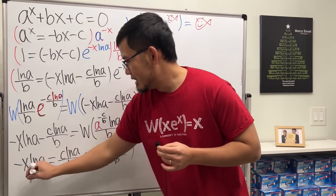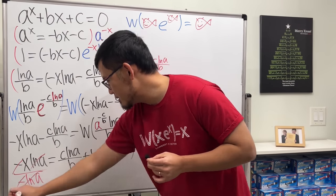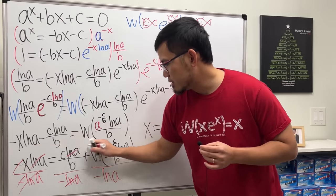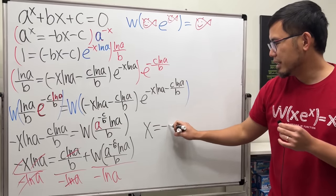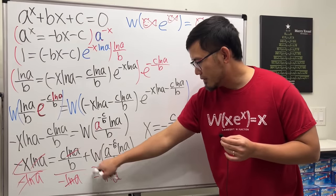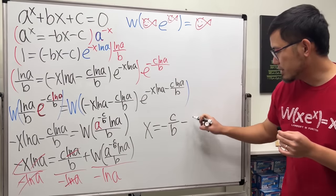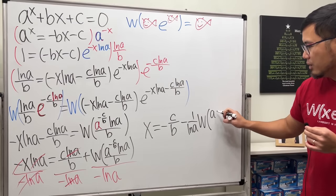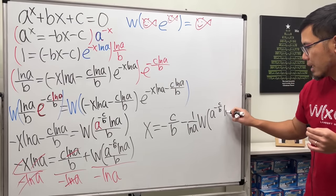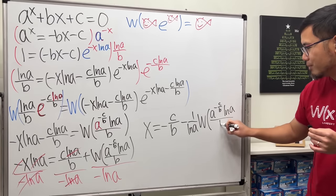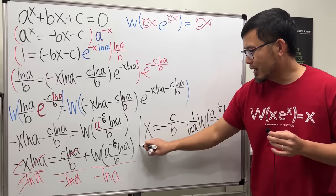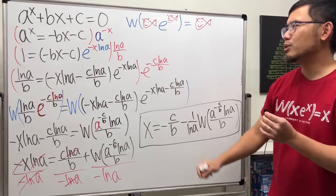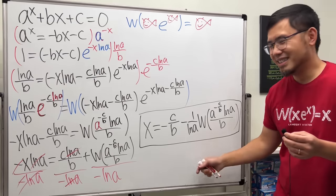And finally, divide everybody by negative ln a. And ladies and gentlemen, X will be equal to, here, this and that can solve. We have negative, so negative C over b. Then we have a minus. And then let me just write this down as 1 over ln a. And then the rest, which is W of a to the negative C over b power times ln a over b. Like this. This right here is the formula for this kind of equations. It's a transcendental equation. Meaning that it's hard.